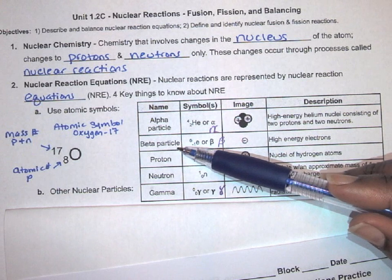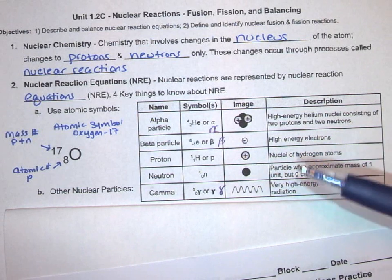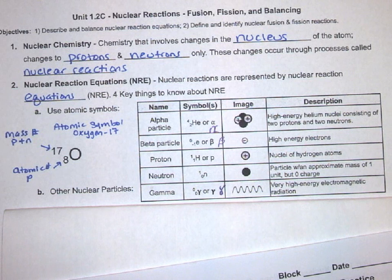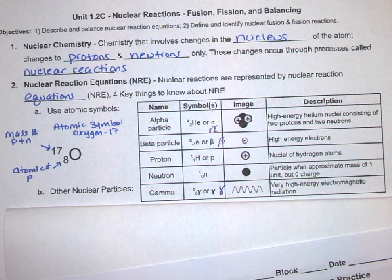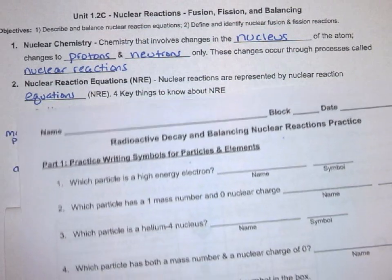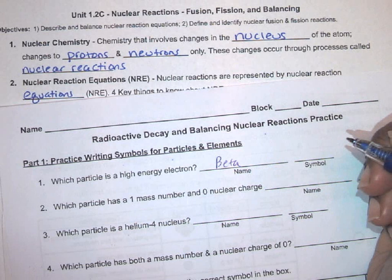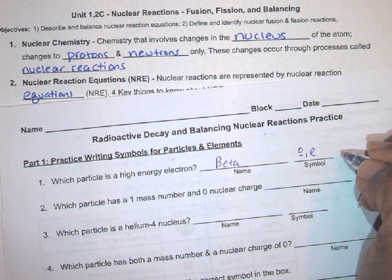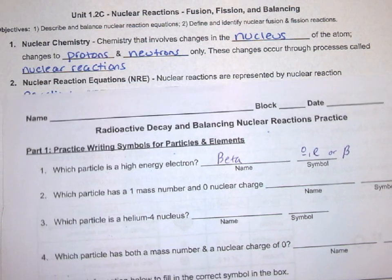The name would be a beta particle, and the symbol would be either the beta symbol or we can use the electron symbol. I would write here, high-energy electron, the beta particle, or write the symbol. You can either do the electron symbol or a beta symbol.